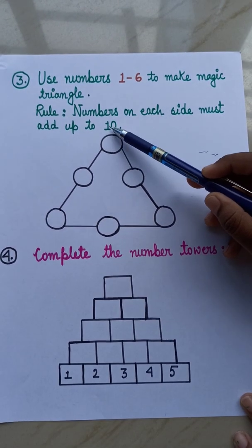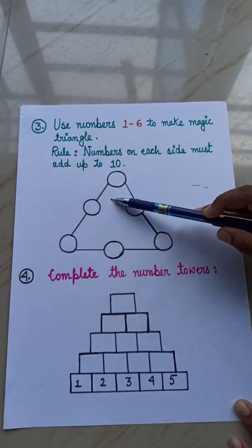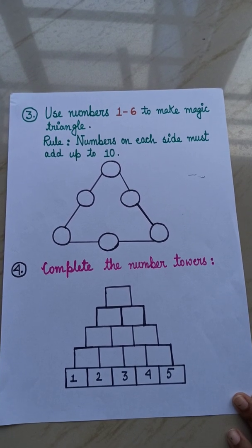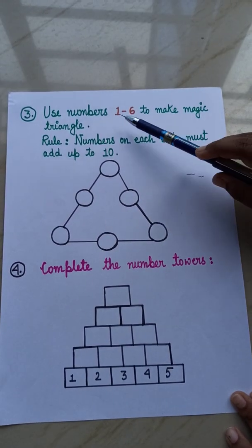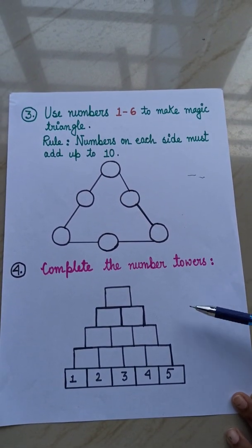Each side, whether this, this or this. Each side will add up to 10. And use the numbers from 1 to 6.